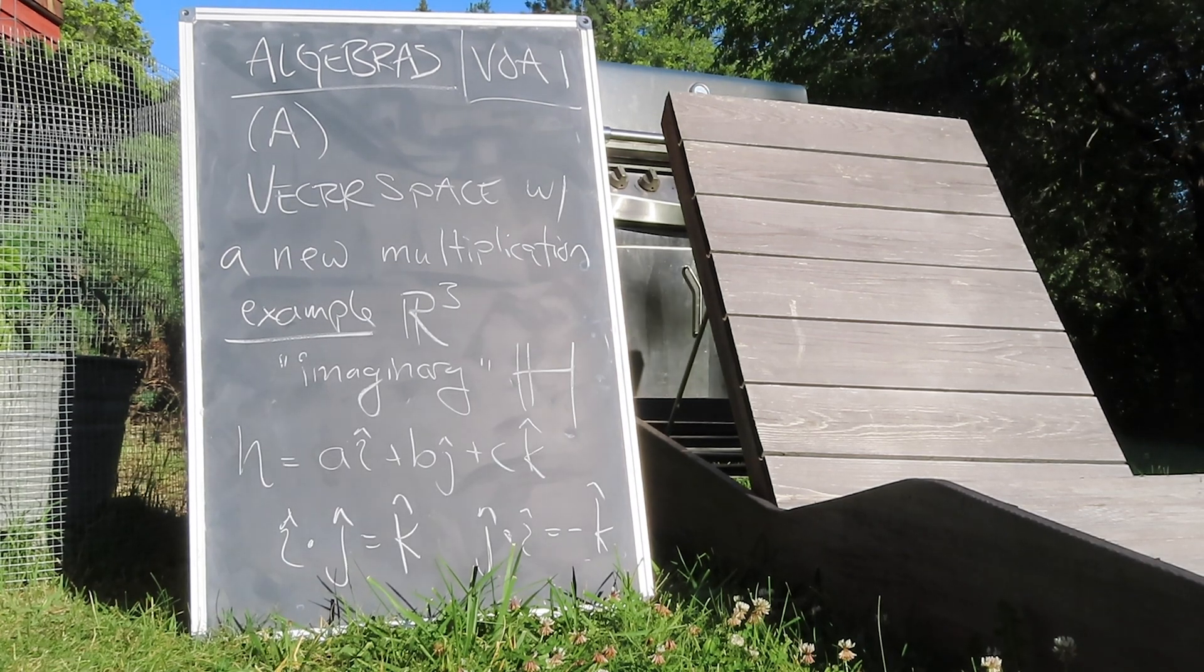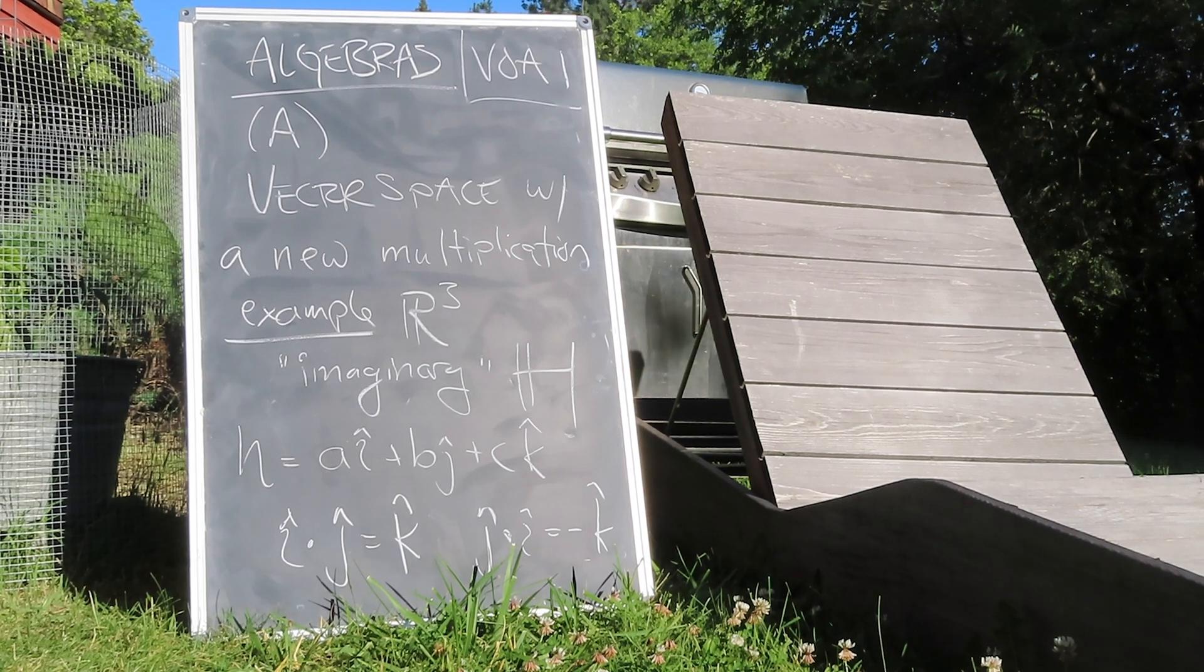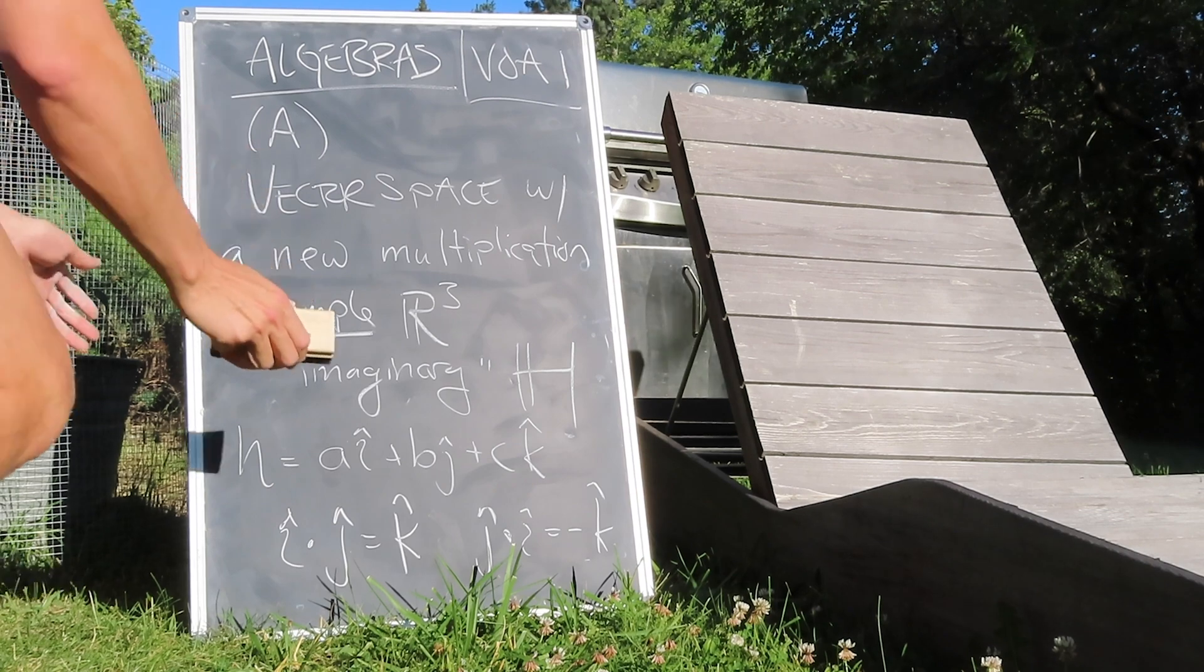where, say, i, j, and k all square to minus one, and i times j equals k, as does its cyclic permutations.